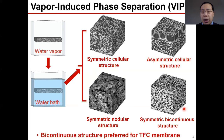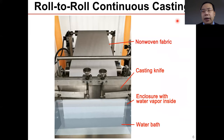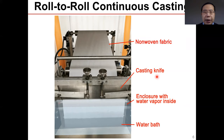In this study, we prepared a PES substrate with bicontinuous structure using a novel mixed solvent system comprising 2-pyrrolidone (2PD) and 2-methoxyethanol (2ME) by a roll-to-roll casting machine. Here is the continuous roll-to-roll casting machine we have in our lab. You can see nonwoven fabric coming in and passing through the casting knife. After that, the film enters the VIPS enclosure, where water vapor is present and vapor-induced phase separation takes place.